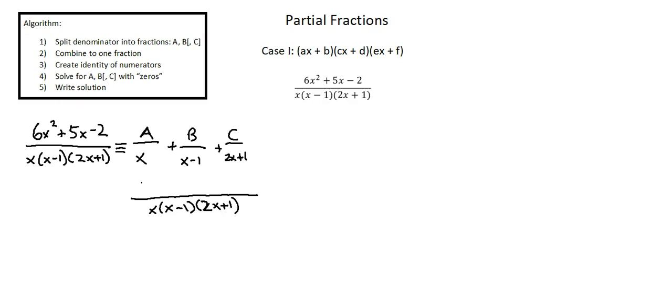Notice that A is divided by x. We want to divide by x and x minus 1 and 2x plus 1. So we need to multiply A by the remaining two factors. A times x minus 1 times 2x plus 1.